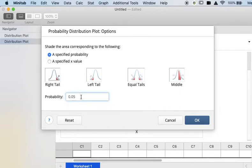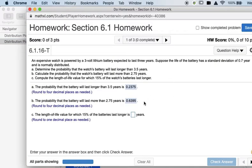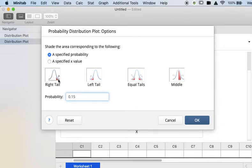Remember, probabilities are always between 0 and 1. If they're giving you the probability as a percentage, in this case it was 15%, I would enter that as a decimal, 0.15. And I want to know the length of life value for which 15% of the batteries last longer. So values that last longer are on the right, so it's going to be a right tail.